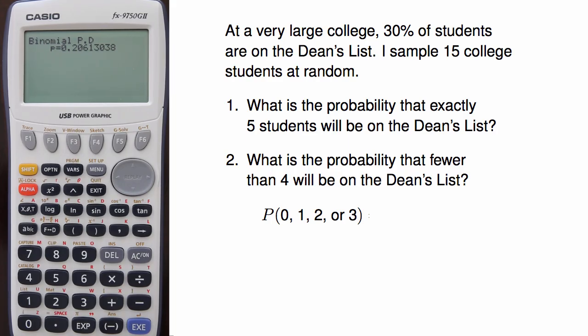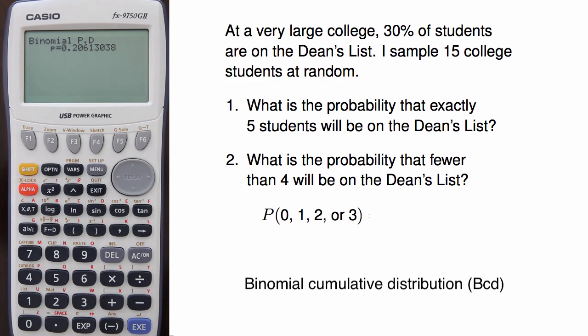I could compute the binomial probabilities for each of these scenarios separately and then add them together, but that would take a while. Instead, I should use the binomial cumulative distribution function, which gives the left tail of a binomial distribution. To use it, I'll again need to identify the parameters.